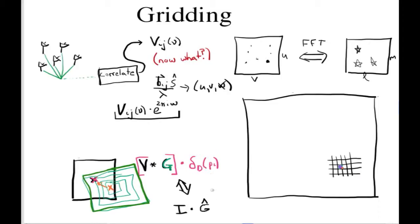And that means that your image over here is going to be multiplied by a kind of ugly function that is boxy and has side lobes sticking out of it.